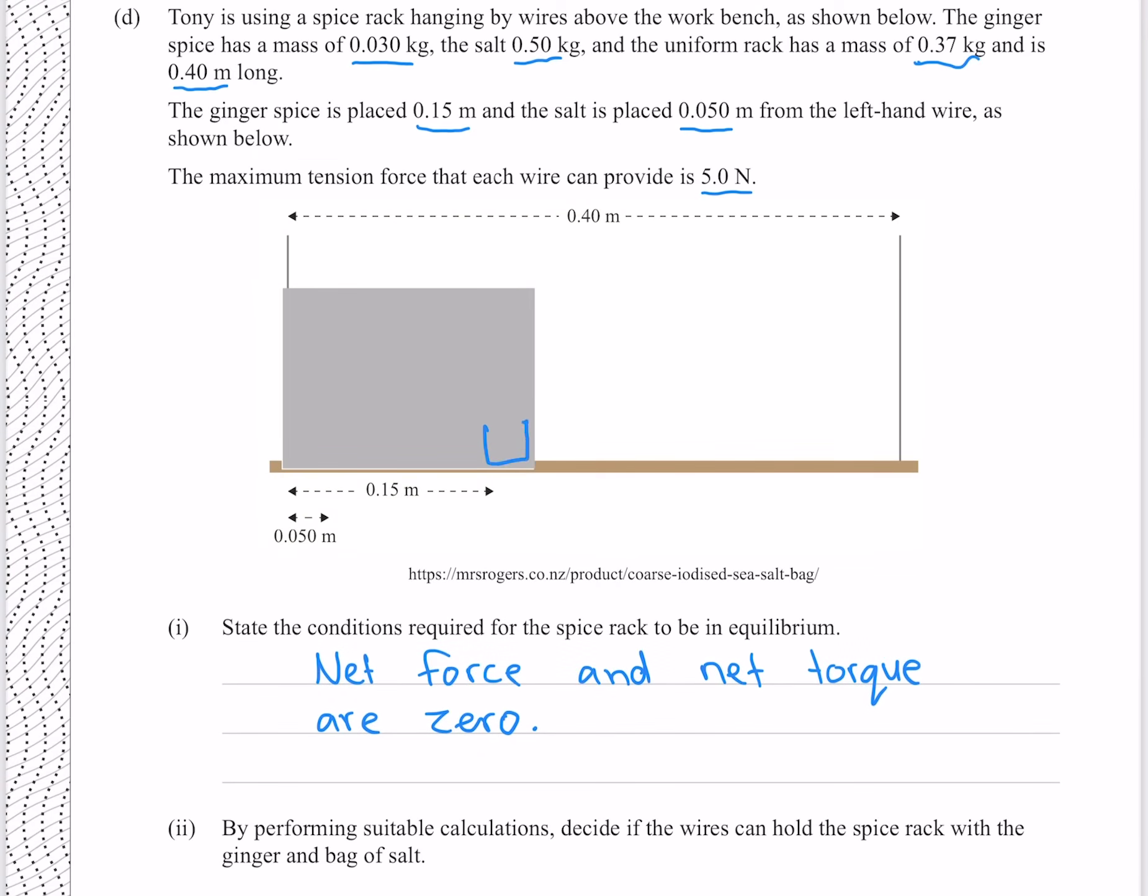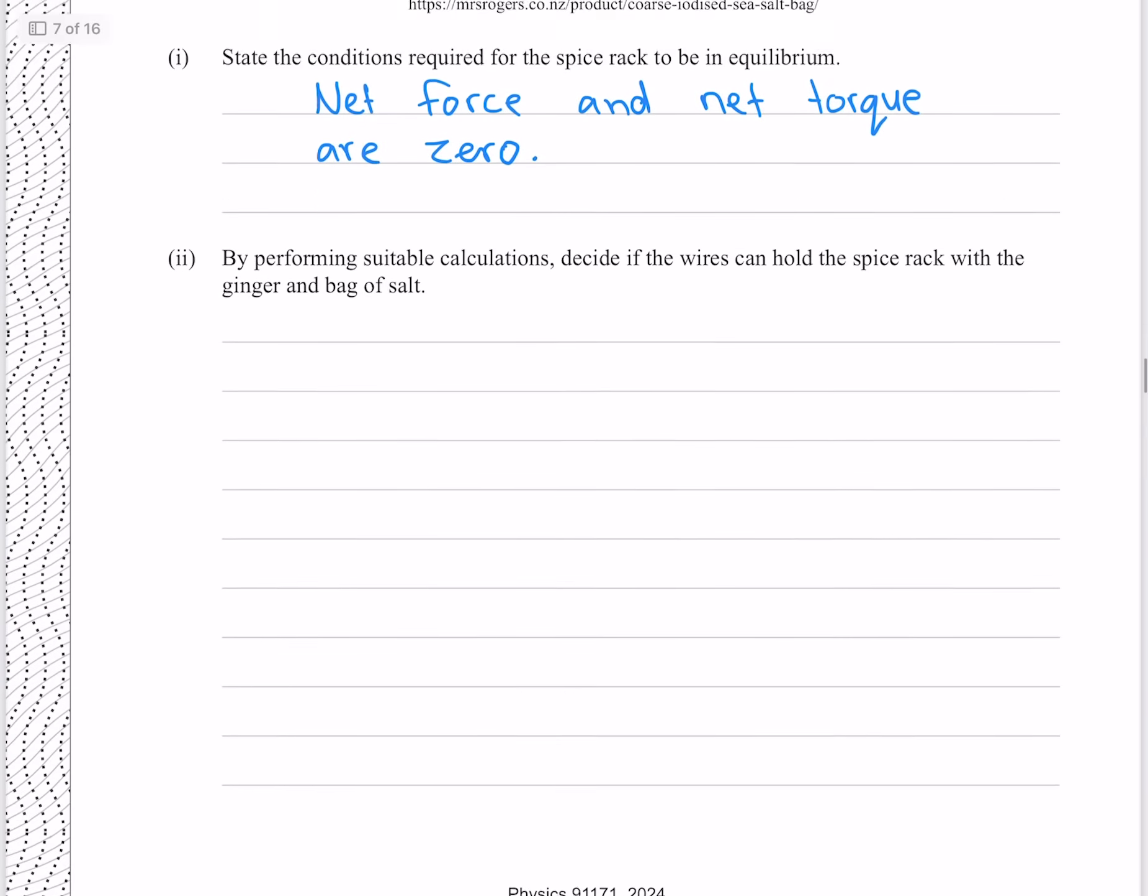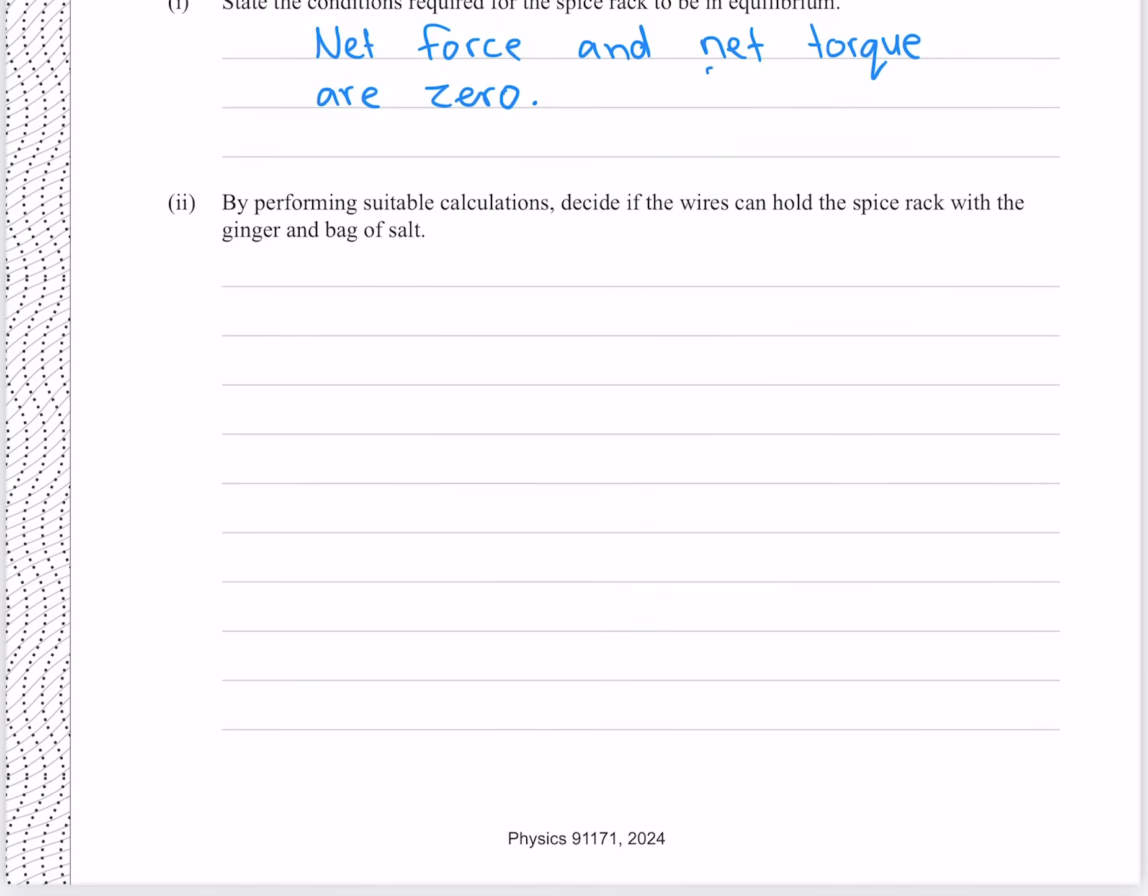By performing suitable calculations, decide if the wires can hold the spice rack with the ginger and bag of salt. And so our ginger is here, and our salt is here. Knowing the masses of each, we can find their forces, and knowing the distance we can find their torques. We also can't forget that the uniform rack has a mass of 0.37, so it too will exert a torque. What we now need to do, is to find the force at each wire, and compare it to 5 newtons. To do this, we can start with our second statement here, that the net torque must be 0. That means that the clockwise torque must be equal to the counterclockwise torque.